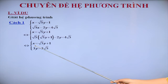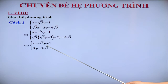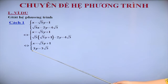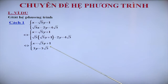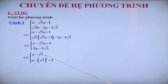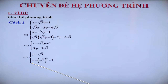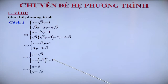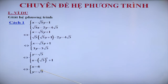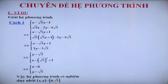Cô được hệ phương trình X bằng căn 5 nhân Y cộng 1 và 3Y bằng 3 căn 5. Từ đó, cô tìm được Y bằng căn 5. Thế vào phương trình còn lại, ta được X bằng (căn 5) bình phương cộng 1, và từ đó chúng ta tìm được X bằng 6. Vậy (X; Y) = (6; căn 5) chính là nghiệm duy nhất của hệ phương trình.